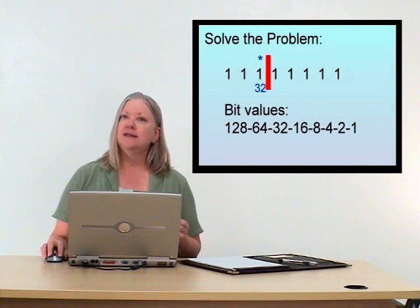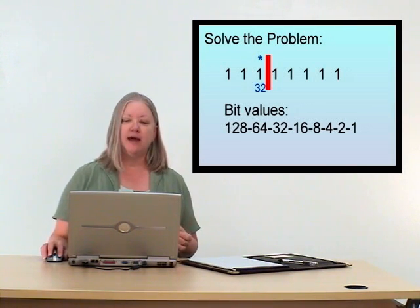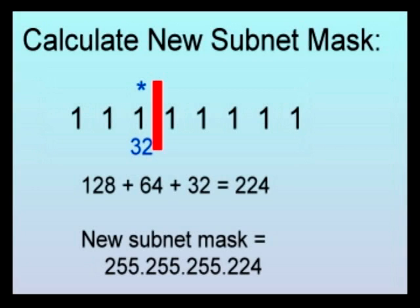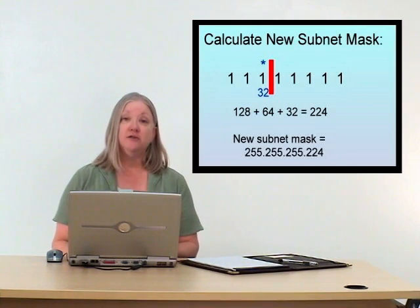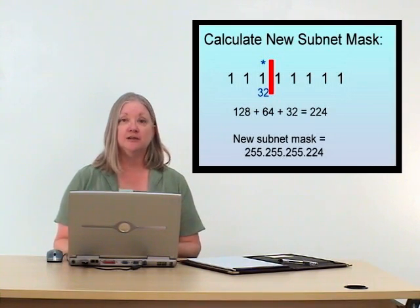First things first — let's get that new subnet mask. We're going to take the value of the three bits that we borrowed: 128, 64, 32, and add them together. This gives us 224. Congratulations — you've just come up with the new subnet mask: 255.255.255.224. For a CompTIA exam, that's probably all you have to do — you're on to the next question.